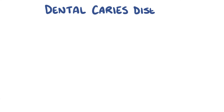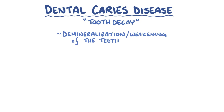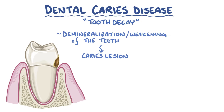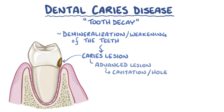Dental caries disease, also called tooth decay, refers to demineralization or weakening of the teeth. The end result of caries disease is a caries lesion. An advanced caries lesion can progress to the point where the tooth surface forms a cavitation, or a hole, which is the physical evidence of tooth breakdown.